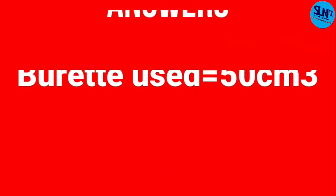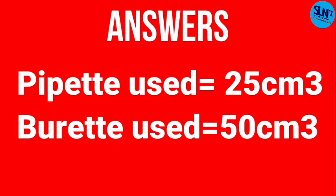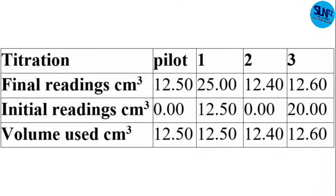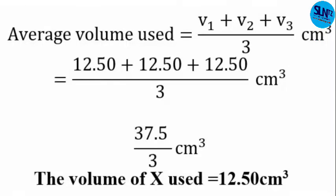Let's proceed with the answers in a systematic way. The first step is to show the pipette used and the burette used. The pipette used is 25 mL and the burette used is 50 mL. After that, you are supposed to show the table of results, recording burette readings in cm³ to two decimal places.